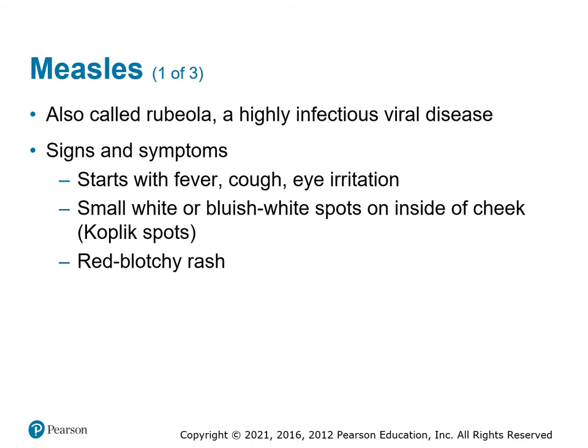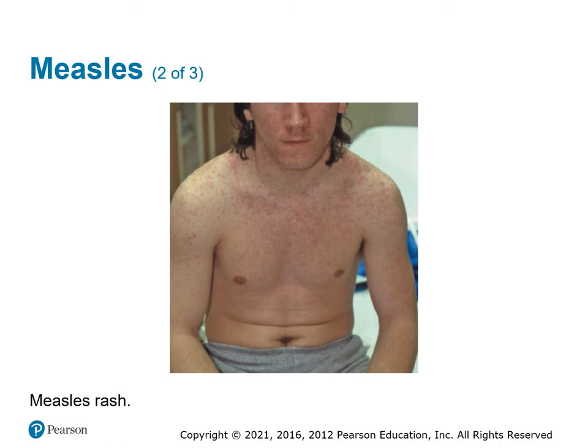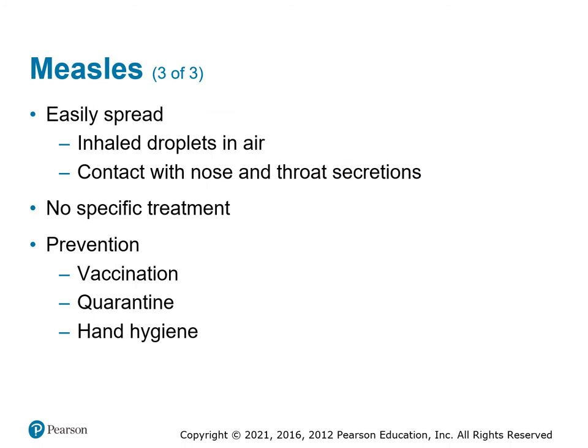Measles, also called rubella, is a highly infectious viral disease. It starts with a fever, cough, and eye irritation. It can easily be spread and requires standard precautions. Patients at high risk — including infants less than one year old, pregnant women, and immunocompromised individuals — may receive immunoglobulin for protection. Measles is a reportable disease, and an increasing number of outbreaks have occurred in recent years among unvaccinated patients. Contact a receiving facility to ensure they can handle it properly. It is very easily spread through inhaling droplets or contact with nose and throat secretions. There is no specific treatment — prevention is key through vaccination, quarantine, and improved hand hygiene.